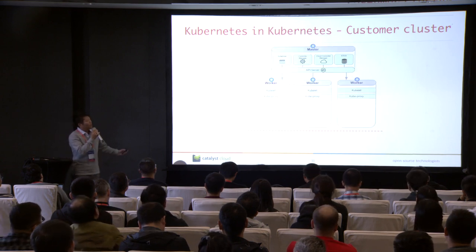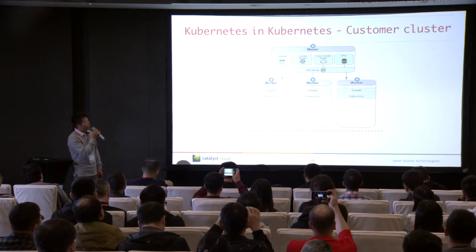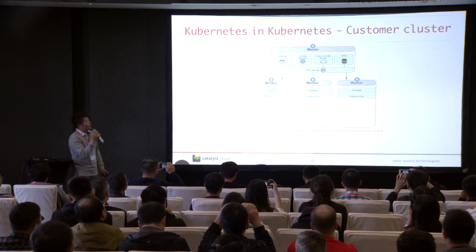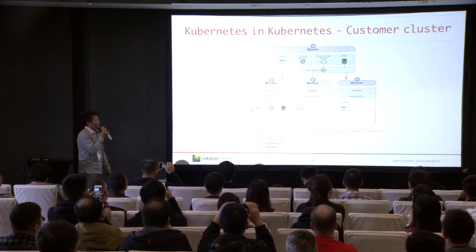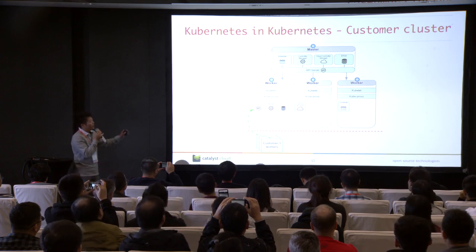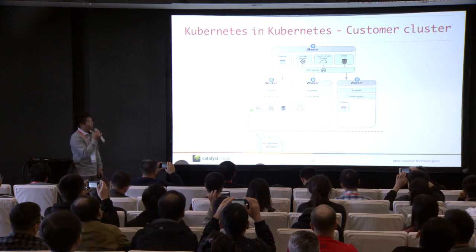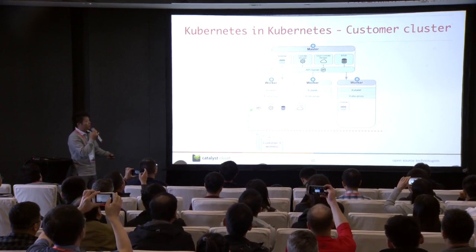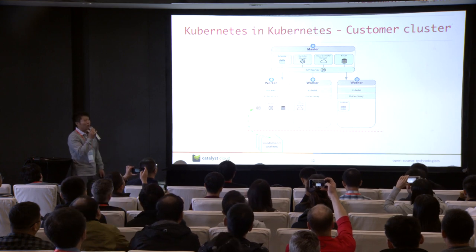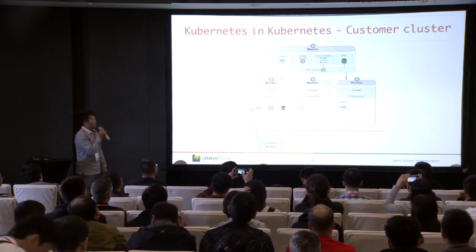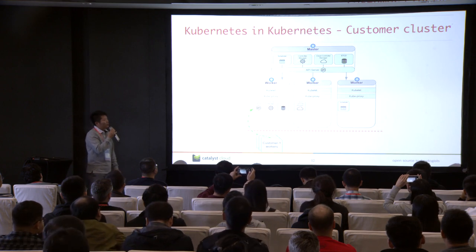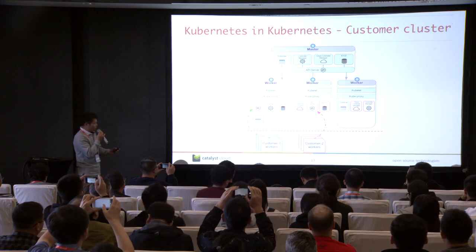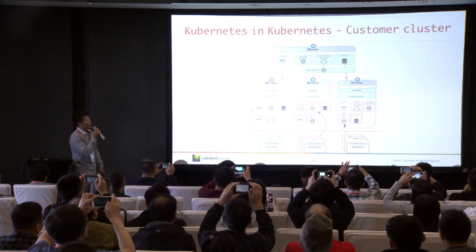For example, this is a seed cluster consisting of one master and three workers. If a user wants to create a customer cluster, Magnum will create all the controller components inside the seed cluster, create the worker nodes in the customer's tenant, and connect the worker nodes to the API service of the controller components. And similarly, a second and third customer cluster look the same.